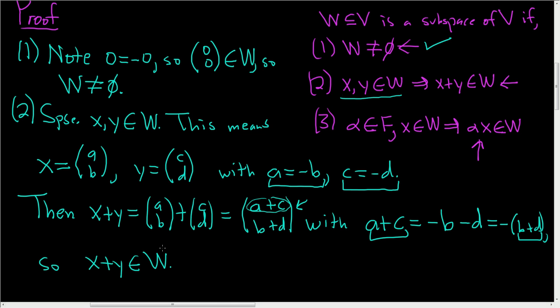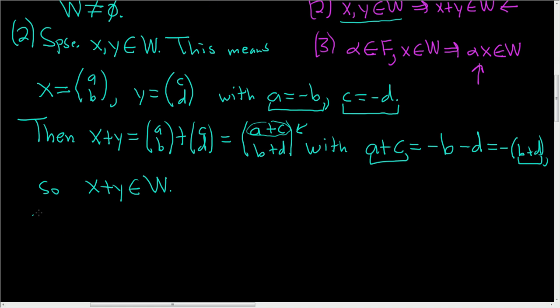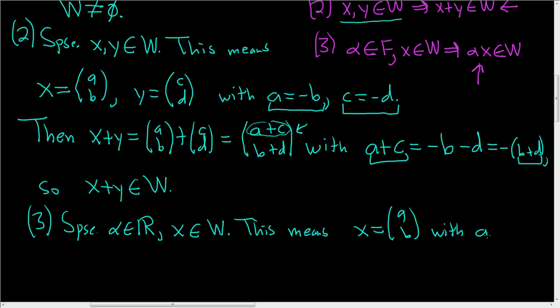The last thing we have to do is explain why it's closed under scalar multiplication. So three. We'll start by taking some alpha. So suppose alpha is a real number. So in this problem, our field is R, and X is a vector in W. So as before, we usually write down what this means. So this means that we can write X equal to A, B, with A equal to negative B.